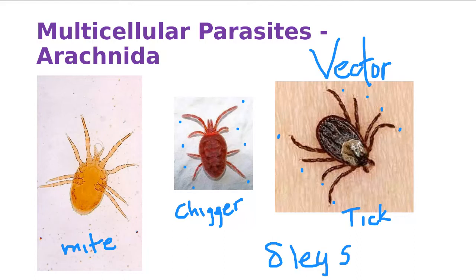It's almost time for chigger season. If you don't like chiggers, come this spring — stay out of the Bermuda grass. They love Bermuda grass. Now you can see an overview of the different types of parasites we're going to be talking about. Some of them are truly parasites, but others can also be vectors, so they're important that way.